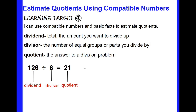Okay, now that you have written these definitions and the example down — our dividend is a total amount that we're going to start with; it's the total that we want to divide up. Our divisor is the number of equal groups or parts you want to divide by.